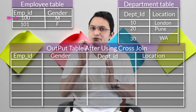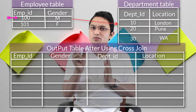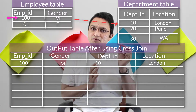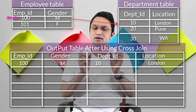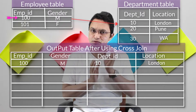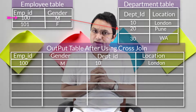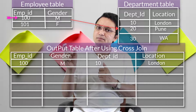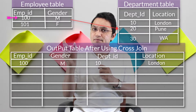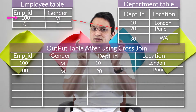As soon as the query is triggered, the pointer will start pointing to the first row of the employee table. The first row of the employee table will connect or join with the first row of the department table, and this becomes the first output row, which gets added to the output table. Now the pointer will move to the next row of the department table, not the employee table.